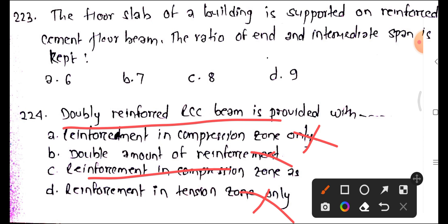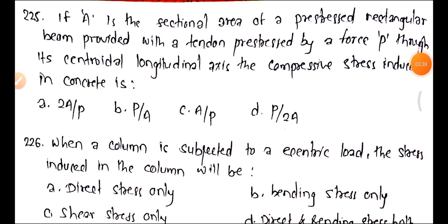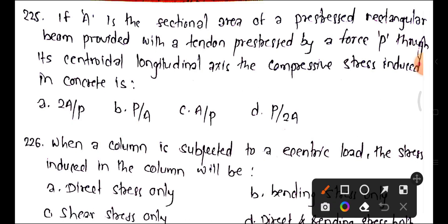Question 225: If A is the sectional area of a rectangular prestressed beam provided with a tendon, prestressed by force P along the centroidal axis, the compressive stress induced in concrete is P divided by A. The answer is P/A.